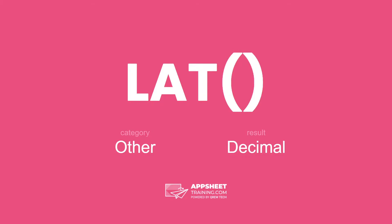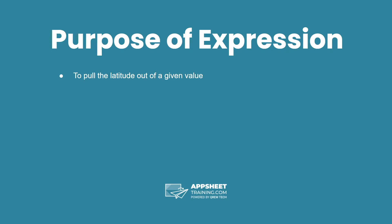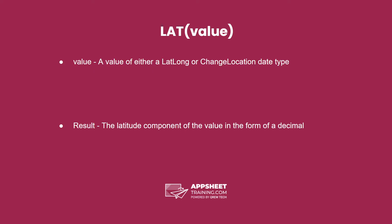The lat expression is in the category 'other' and has a result of a decimal data type. The purpose of this expression is to pull the latitude out of a given value. The lat expression has one parameter: a value of either a lat-long or change-location data type. The result is the latitude component of the value in the form of a decimal.